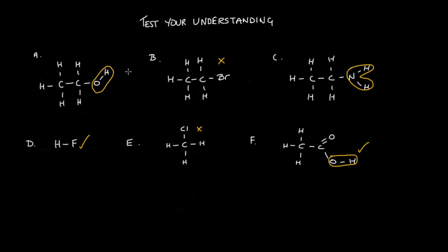In summary, A — which is ethanol — will exhibit hydrogen bonding. C — which is ethylamine — will exhibit hydrogen bonding. D will exhibit hydrogen bonding, and so will F. Molecules that exhibit hydrogen bonding tend to have higher boiling points compared to molecules of similar mass, as a direct consequence of hydrogen bonding.